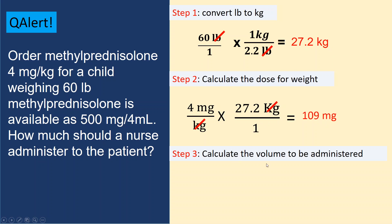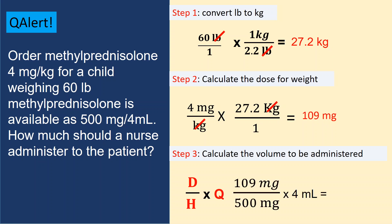Step three: calculate the volume to be administered using the Desired over Have method. Desired dose is 109 milligrams, on hand is 500 milligrams for 4 mLs. Cancel out milligrams, and you get 0.87 mLs. So 0.87 mLs must be withdrawn from the vial to administer 2 milligrams per kg for a 60-pound patient.